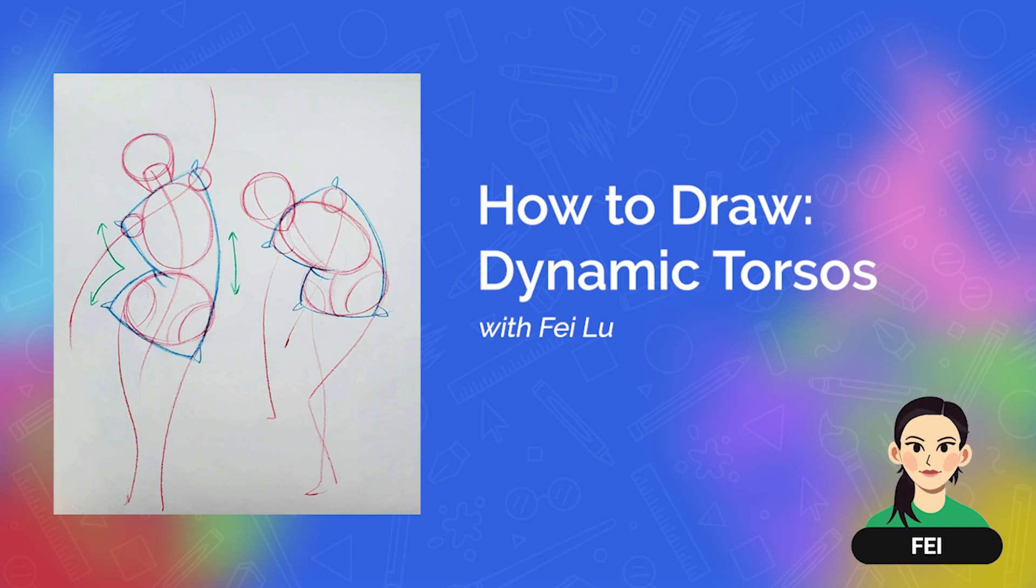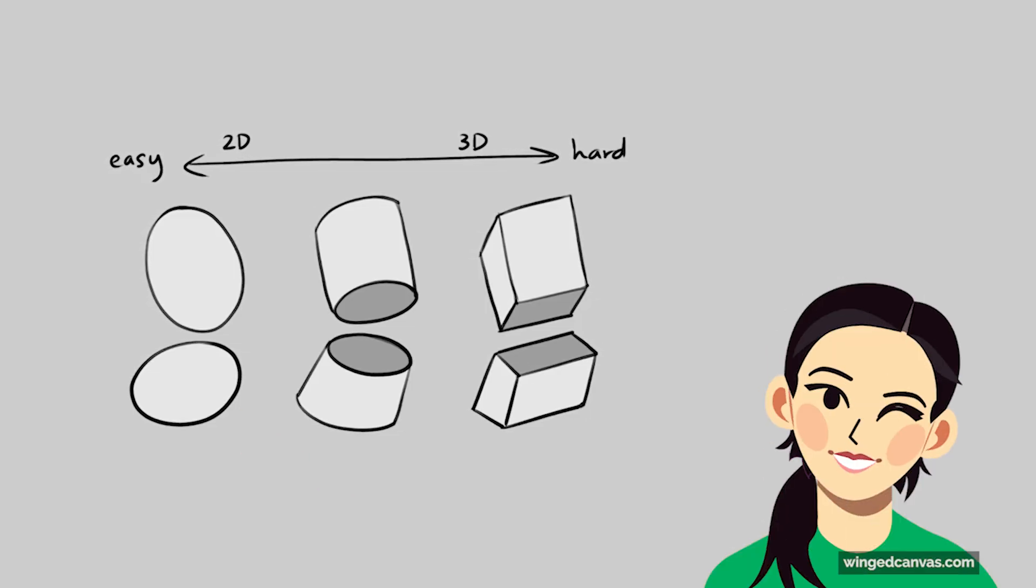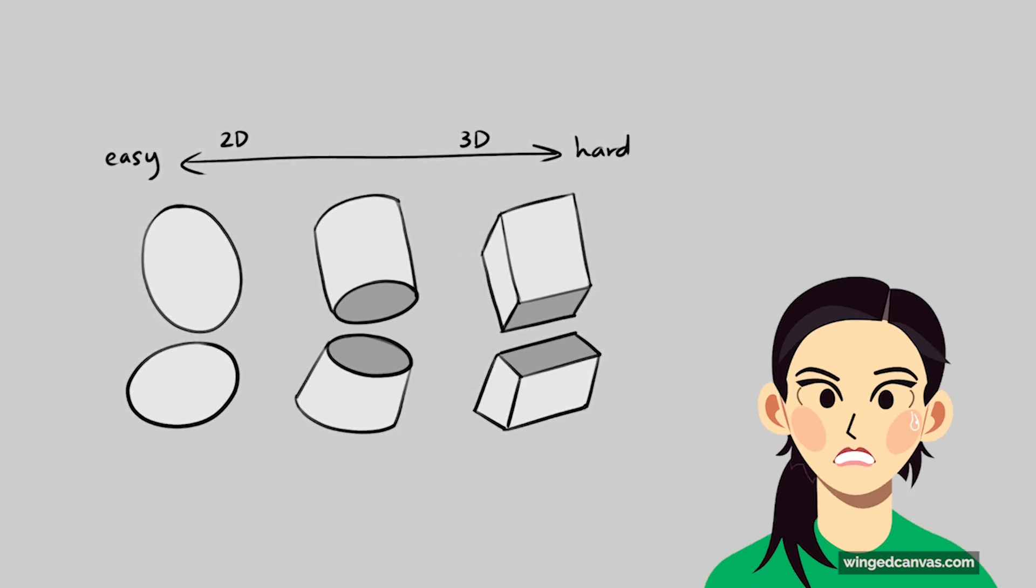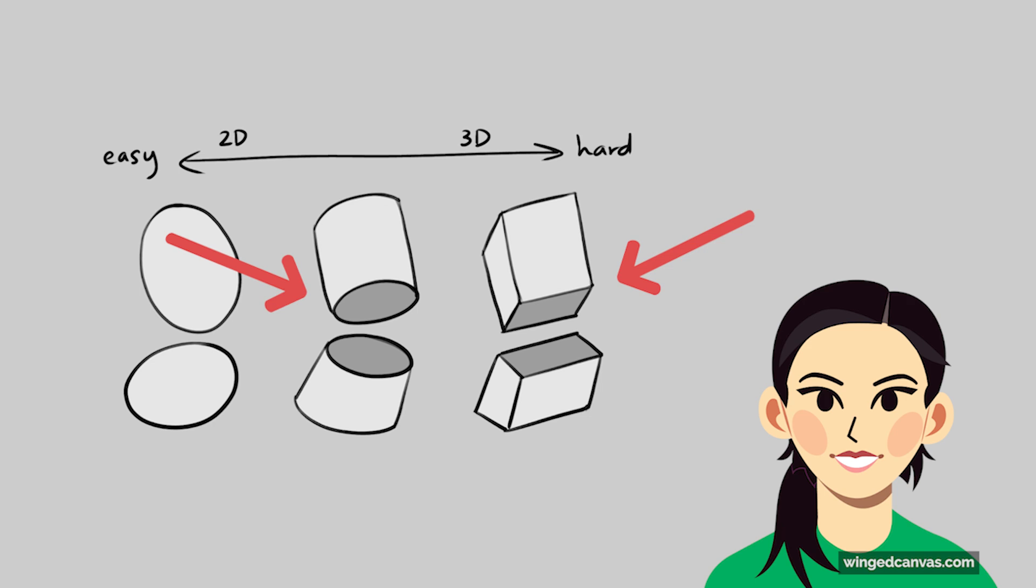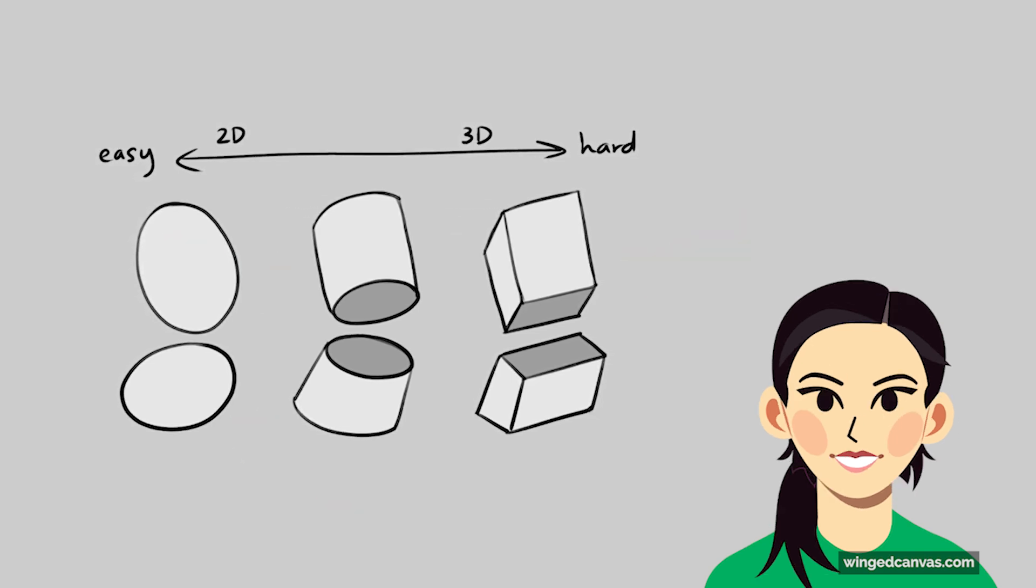I'm going to show you different ways you can draw the torso. We will do some step-by-step practice. The image on the left you can see is basically just two ovals. If you are not comfortable drawing 3D forms, which are the next two, you can stick with shapes as long as the proportions and the mass of those shapes are correct.